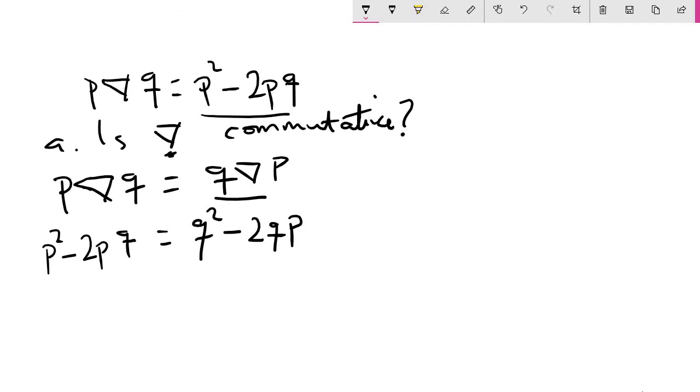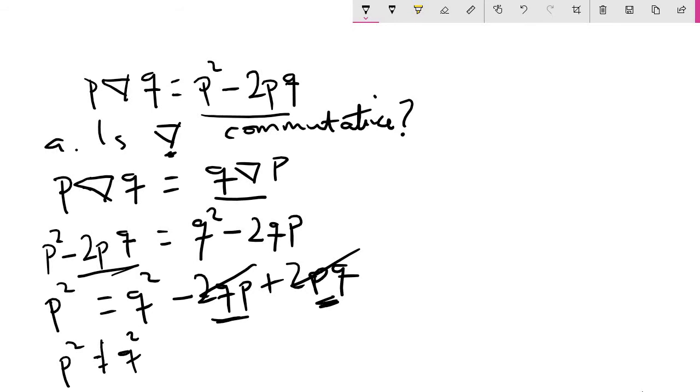You can do the basic mathematics technique by sending one of these guys to the other side, so you get P squared equals Q squared minus 2PQ plus 2QP. Now you can clearly see that these guys are the same and it's plus and minus, so they cancel out. What we have left is P squared equals Q squared. Are these two the same? No, P squared is not equal to Q squared. Therefore the Delta operator is not commutative.